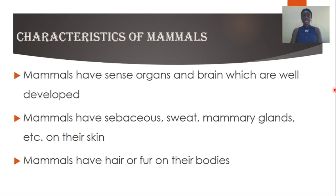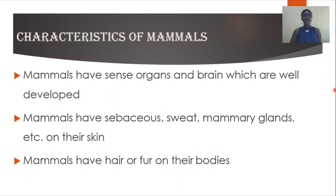Mammary glands serve a very important function which we will discuss shortly. Mammals also have hair or fur on their bodies. Hair follicles are visible on your skin and serve as insulation to protect the organism from cold. Other mammals have fur in place of hair — examples include mice, polar bears, cattle, dogs, and cats. They all have fur for insulation and protection of their bodies.